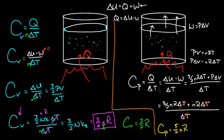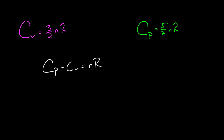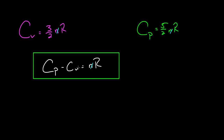The molar heat capacity at constant pressure is 5/2 R. Notice they're almost the same: heat capacity at constant volume is 3/2 N R, and at constant pressure is 5/2 N R — they differ by just N R. So Cp minus Cv = N R. For molar heat capacities, the difference is just R, since everything divides by the number of moles. This is an important relationship between heat capacity at constant pressure and heat capacity at constant volume.